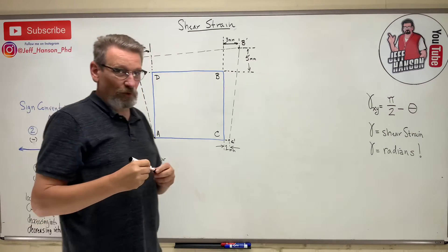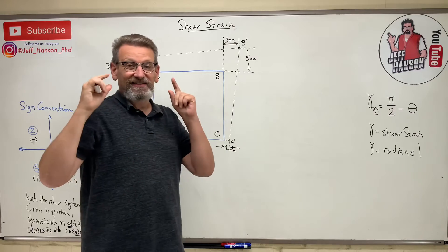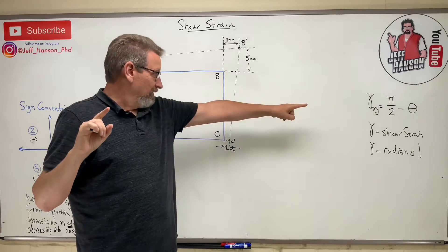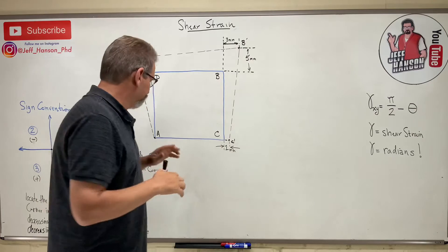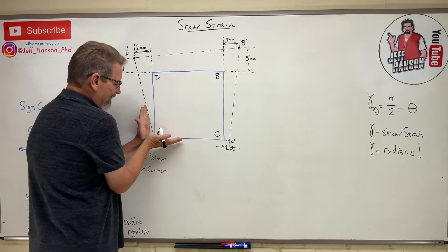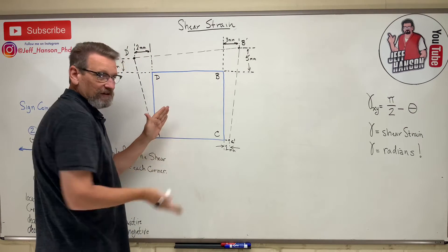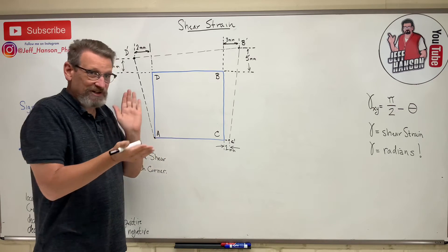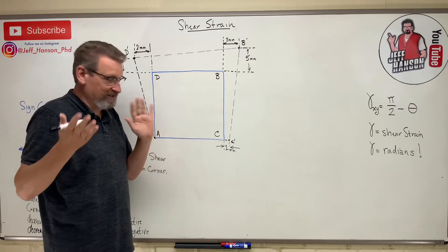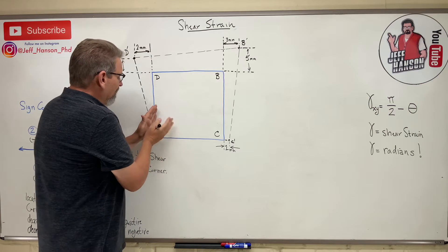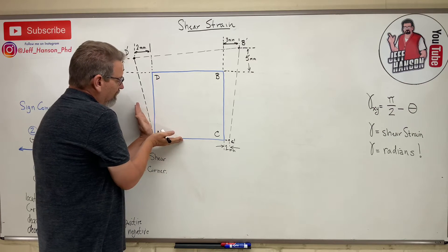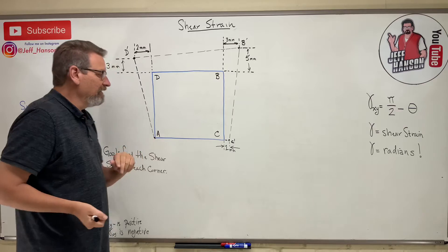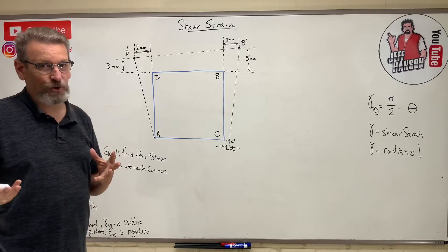Now the one thing that's really kind of confusing is the signs of shear strain. What is it? Is it positive or is it negative? At corner A, if it decreases, it's a positive. I know it seems like if every time it decreases, it ought to be a negative, right? But it's not. At corner A, if corner A increases, it's a negative.